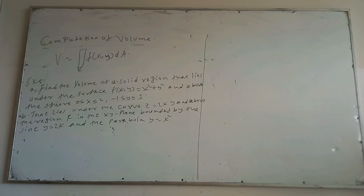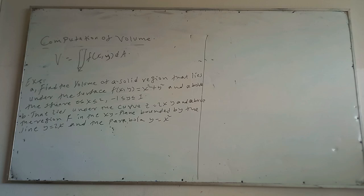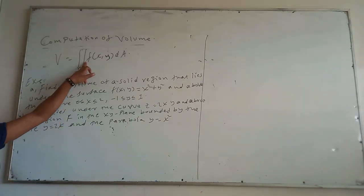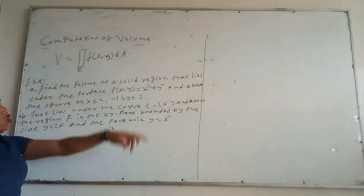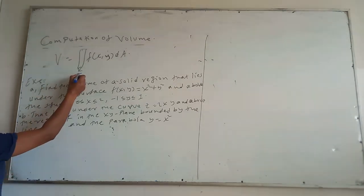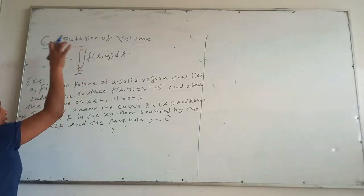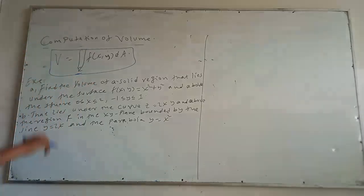If f(x, y) is defined over a region R such that f(x, y) is greater than or equal to zero on region R, then the volume of the solid above the region R and below the surface z = f(x, y) is equal to the double integral over R of f(x, y) dA.